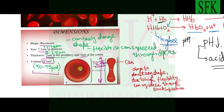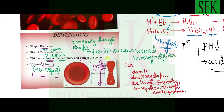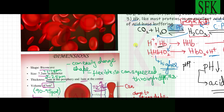Red blood cells are very flexible and can easily change their shape, allowing them to squeeze through blood capillaries that are smaller in diameter than the cells themselves. Despite being 7.8 micrometers in diameter, they can change shape tremendously to squeeze through different blood capillaries to transport various substances.